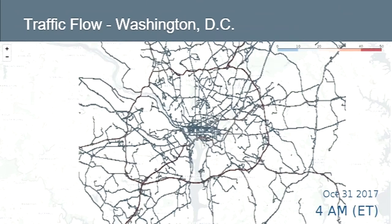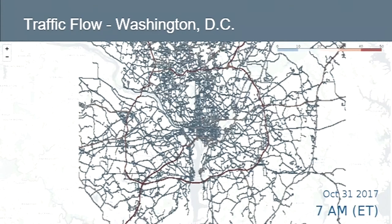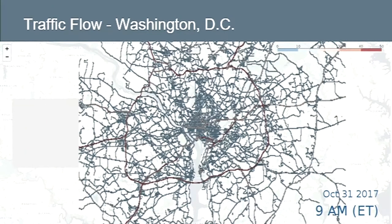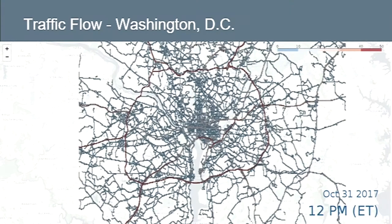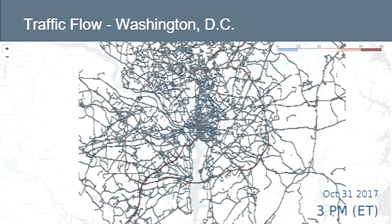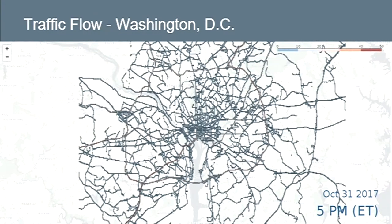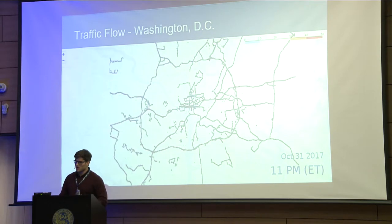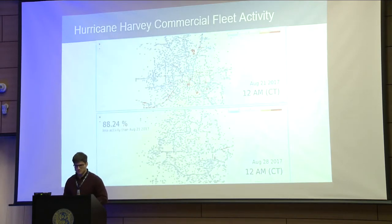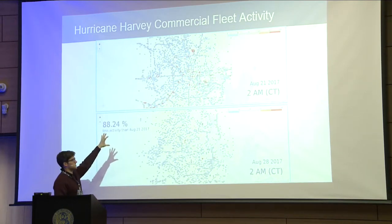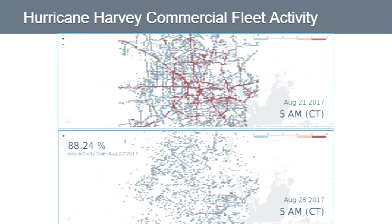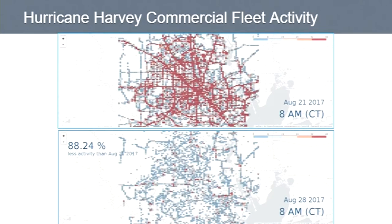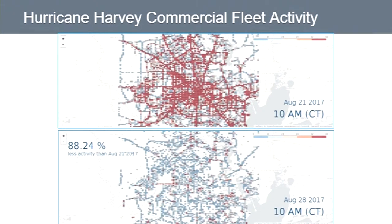We can also get traffic density — how much time vehicles stop in an area, how long it takes to drive through compared to normal, so you can see if there is more traffic. You can really see the heartbeat of a city during the day; this example is Washington. One obvious use is route planning and roadworks management, but another interesting one is understanding disasters. We checked commercial fleet activity one week before and after Hurricane Harvey and saw 88 percent less activity after the hurricane — a huge impact for businesses and customers in that area.